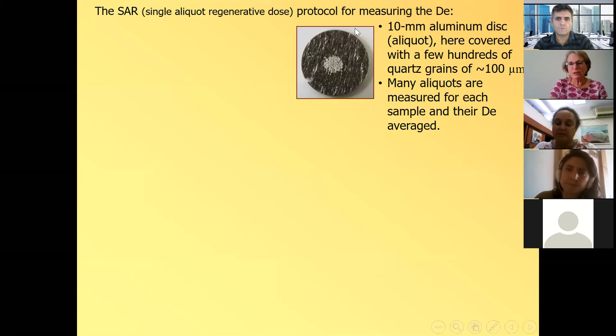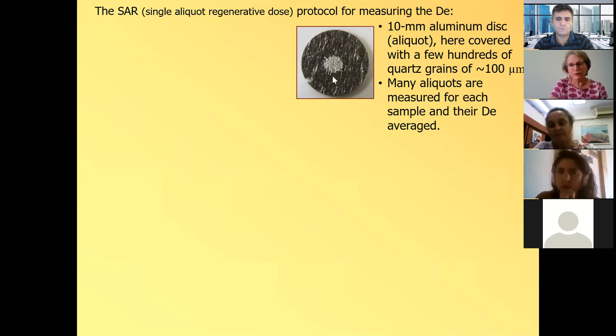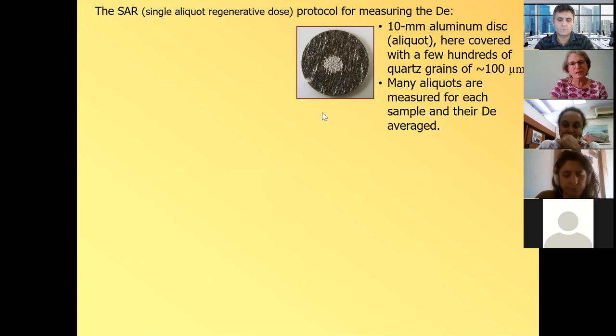Which means at what rate the signal grows because with high radioactivity, the signal is going to grow fast, lower radioactivity, the signal is going to grow slowly. So I'm going to start with talking about the equivalent dose, the upper side of the equation. And we use a protocol that's called single aliquot regenerative dose. And in this case, this is a 10 millimeter aluminum disk. And here it has in the middle of it, a few hundred quartz grains in the range of 100 micron. So this is an aliquot.